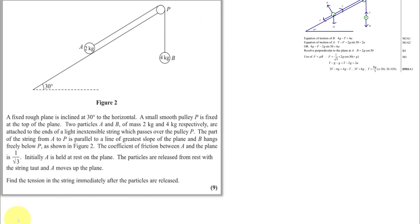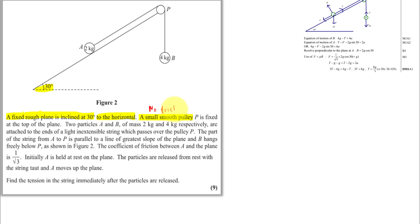Now for a second question in detail to increase your understanding, as there is a lot to these questions built on prior skills. We have a fixed rough plane inclined at 30 degrees to the horizontal with a smooth pulley — so no friction at the pulley — fixed at the top. Two particles A (2 kg) and B (4 kg): with 4g pulling down, tension acts the other way, and 2g acts on A.